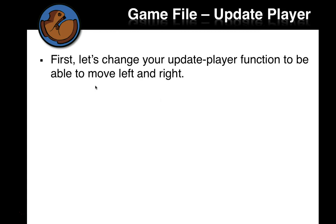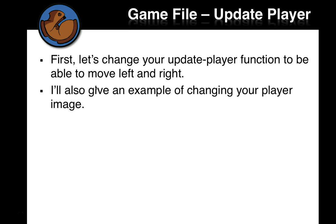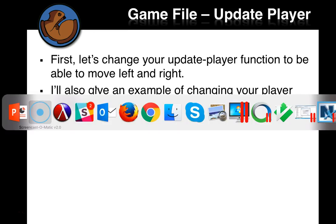But first, let's change your update-player function to be able to move left and right. It's a rocket in the example game and it can only move up and down. So let's make it so that the player can move any direction, and then I'll show you an example of changing your player image.